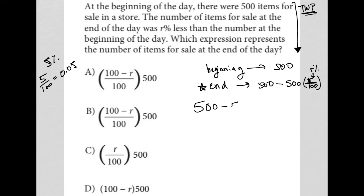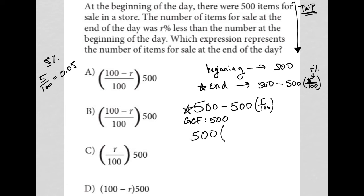My expression is 500 minus 500 times R over 100. Checking my answers, I don't see that exact form — all of my answers have parentheses with 500 outside. So I'll factor: I can think of 500 as a greatest common factor. Pulling it out gives me 500 times the quantity (1 minus R over 100), since 500 times 1 gives the 500, and 500 times R over 100 gives the subtracted term. That's straightforward factoring.